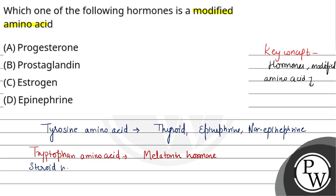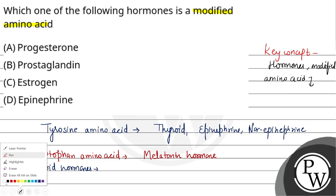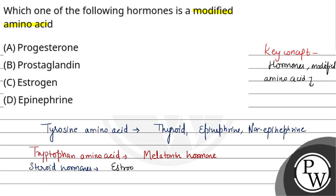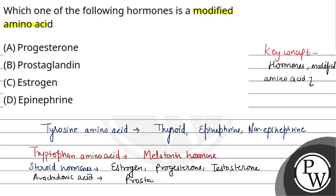Steroid hormones include estrogen hormone and testosterone hormone — these are of steroid nature. If we talk about fatty acids, arachidonic acid is derived from prostaglandin.